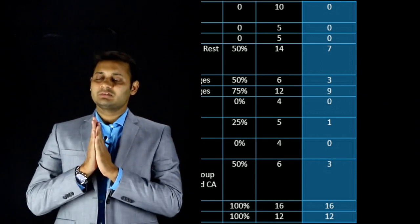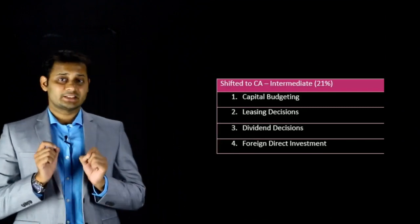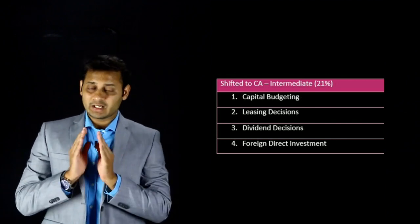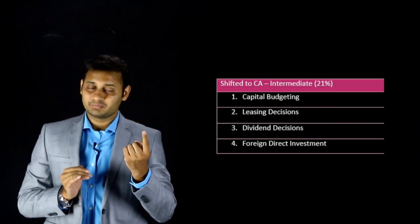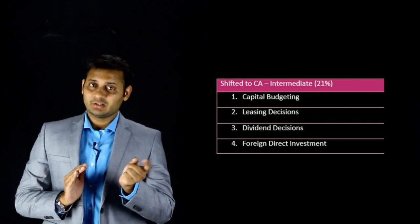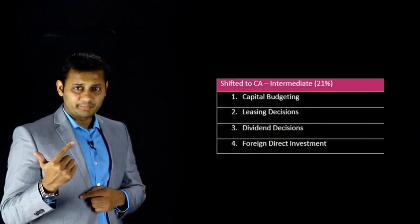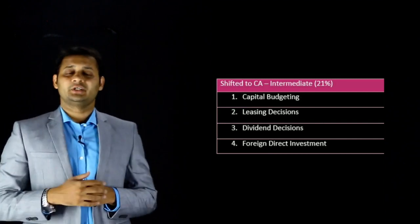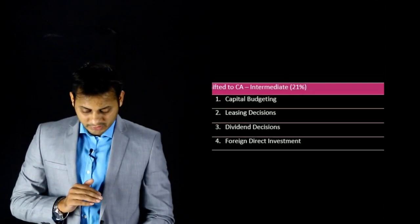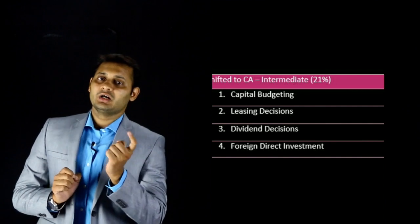Let me now summarize which chapters have been transferred to the Intermediate level from old SFM: first, Capital Budgeting; second, Leasing Decision; third, Dividend Decision; and fourth, Foreign Direct Investment. These four chapters together account for approximately 21% of the old syllabus course content that has been transferred to CA Intermediate level.